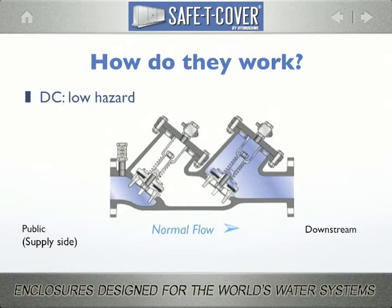The double check assembly was developed in the 50s, and for what it does, it does well. Any time pressure on the downstream side exceeds pressure on the supply or public side, the valves close and the water stops flowing backwards. Keep in mind that no remedy exists in the event of a malfunction of the valve closure, or if debris causes the valves to not close completely.